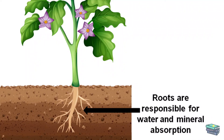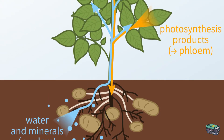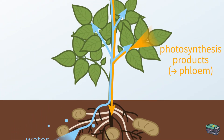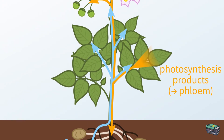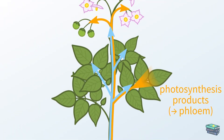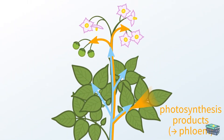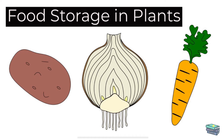...absorb water and nutrients from the soil. The stem carries the absorbed water and nutrients to the other parts of the plant. This process is called transportation. The water travels from roots to the leaves through the stem.